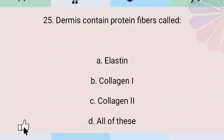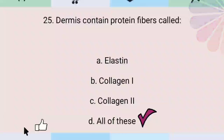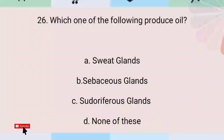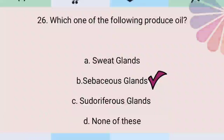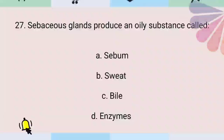Dermis contains protein fibers — all of these types. Which one of the following produces oil? Sebaceous glands produce an oily substance called sebum.